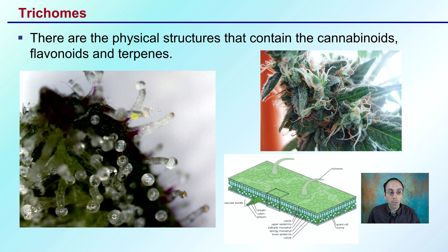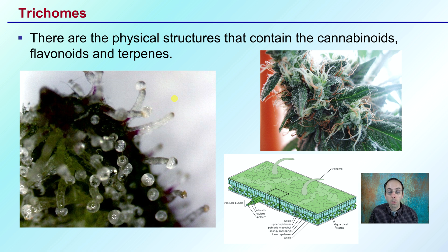First, I'll start with some of the physical structures — the trichomes, as we can see right here. These are the physical structures that contain the cannabinoids, flavonoids, and terpenes. These small structures that look like little white sugar dots — these trichomes — are where most of the cannabinoids we're looking at for pharmaceutical purposes are going to be produced in the plant.